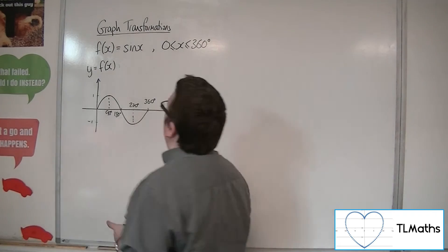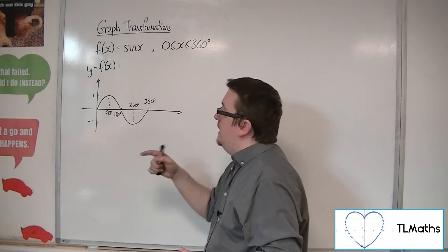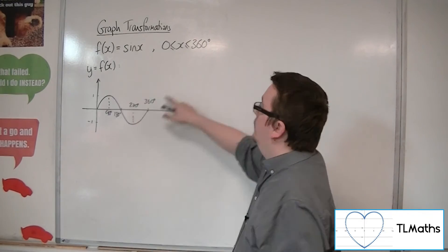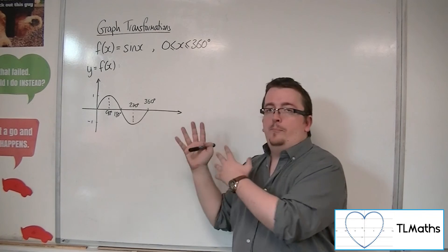So because I'm saying I'm only looking at the bit that is between 0 and 360, although the regular sine curve goes off and continues in both directions, I'm just going to look at that piece.